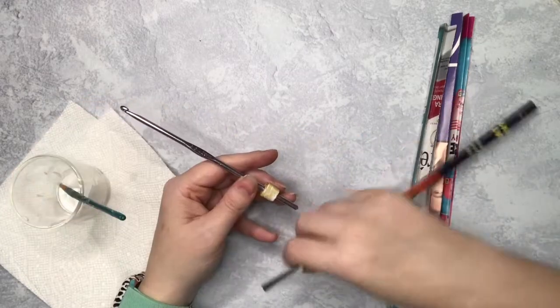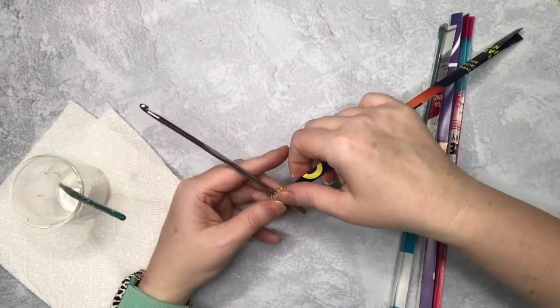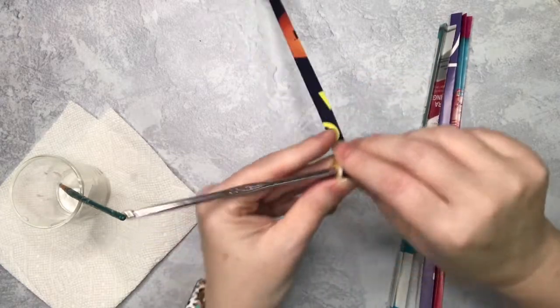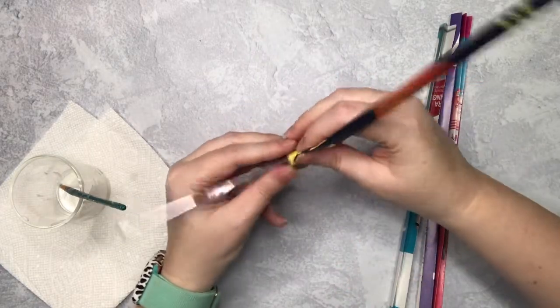Decoupage or Mod Podge glue dries clear, so you can be a little more liberal. Be sure that you're adding glue a little more often for your first wrap of each new strip.